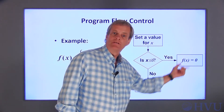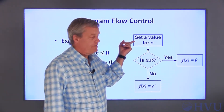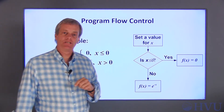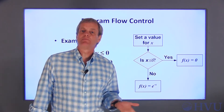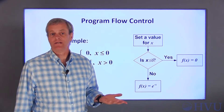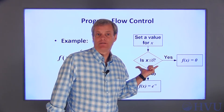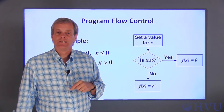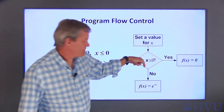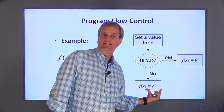This is a graphical description of the decision making process. First, you need a value for the independent variable x. Next, the decision as to which equation to use has to be put in the form of a yes/no or true/false question. In this case, the question is: is x less than or equal to zero? If the answer is yes, we set f(x) equal to zero. If the answer is no, we set f(x) equal to e to the minus x.